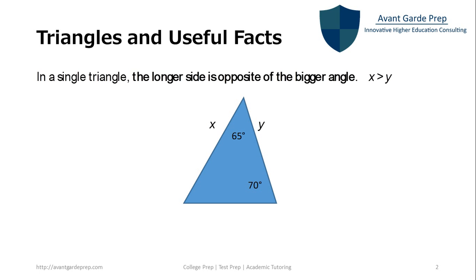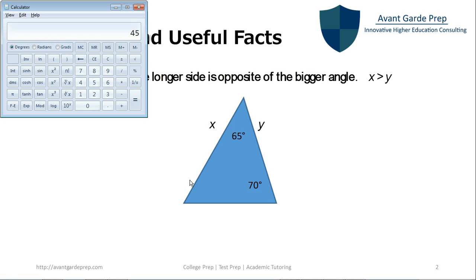In a single triangle, the largest angle is opposite the longest side. In this figure, side x is greater than side y since 70 is the largest angle. Let's calculate the missing angle by subtracting 70 and 65 from 180, which gives us 45 degrees. So we know that y is actually the smallest value and x is the largest value because 70 is the largest angle.